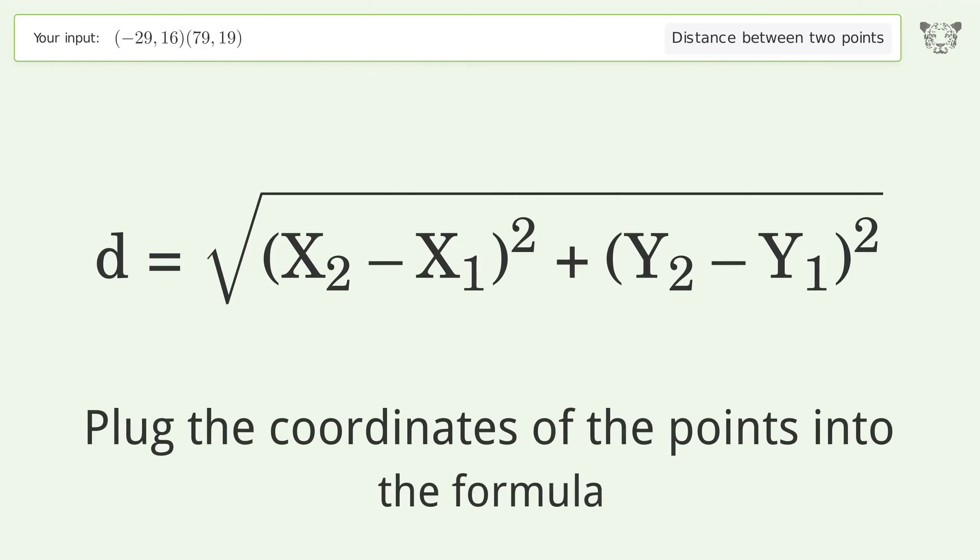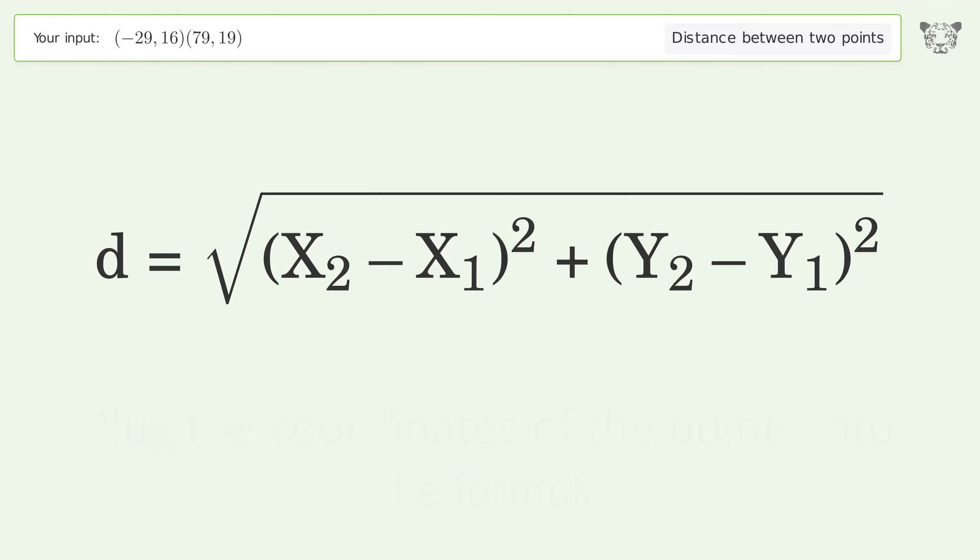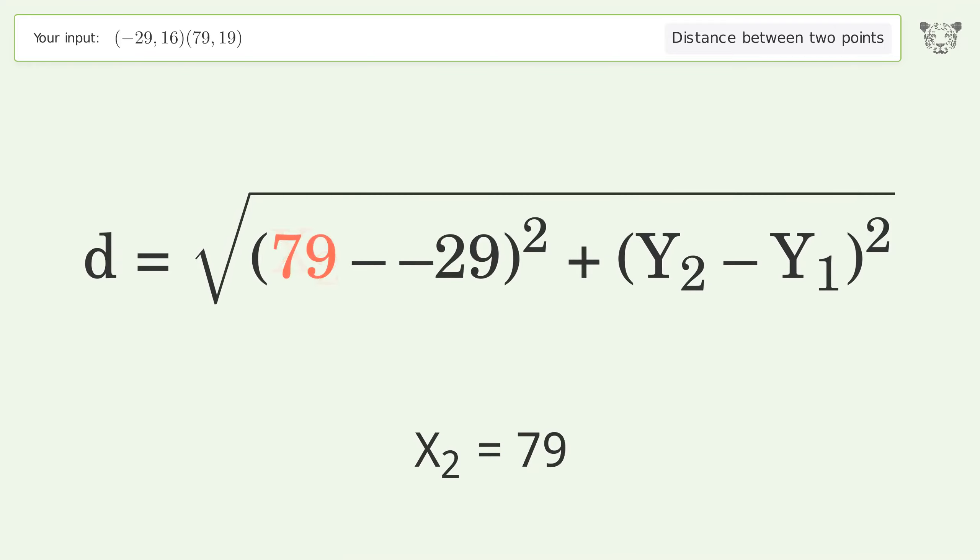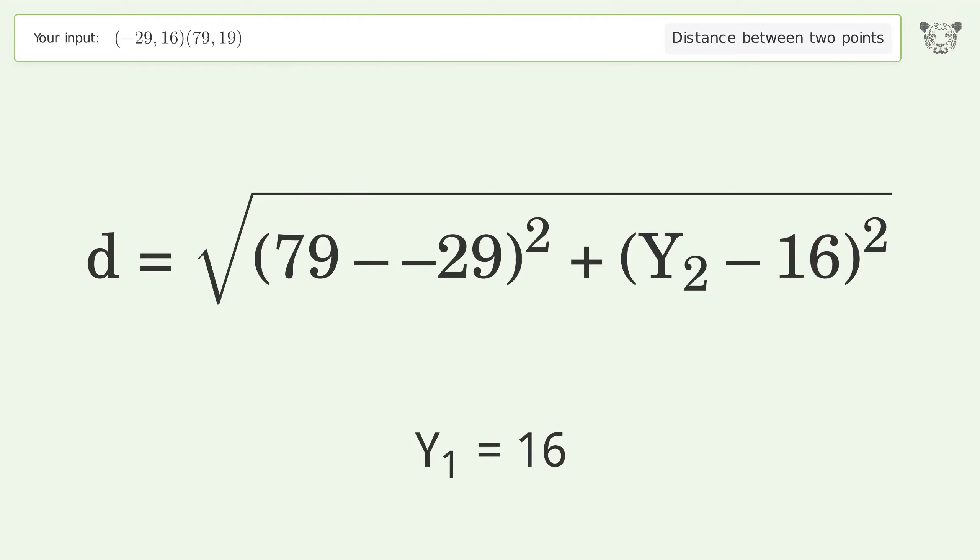Plug the coordinates of the points into the formula: x1 equals negative 29, x2 equals 79, y1 equals 16, y2 equals 19.